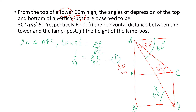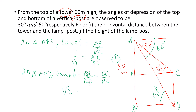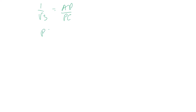In triangle APC, taking tan 30 equals opposite by adjacent gives AP by PC. So 1 by root 3 equals AP by PC. This is equation 1. In triangle ABD, taking tan 60 equals AB by BD. Since BD equals PC, root 3 equals 60 by PC. This is equation 2. From equation 2, PC equals 60 by root 3, which rationalizes to 60 root 3 by 3, giving PC equals 20 root 3 meters.